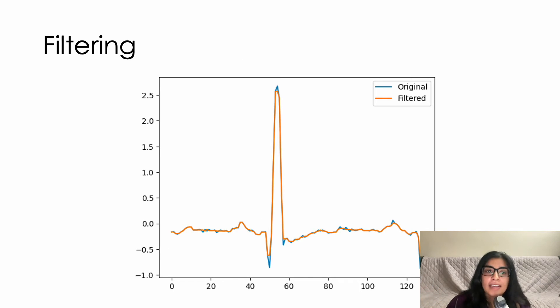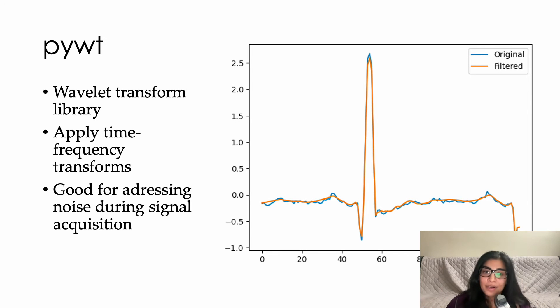We can also perform filtering. And here you can see the ECG waveform, originally the raw waveform is in blue, and then the filtered processed waveform is in orange. And we can remove and smooth out some of those noise sources and end up with a better signal that's easier to work with for any kind of downstream analysis we want to do. An example of a library that is very useful for this kind of work is PyWT. It's the wavelet transform library, which actually applies time frequency transforms. So it doesn't just look at the time domain or the frequency domain of the signal, but actually processes it in tandem. It's very good for addressing the kinds of noise we see in biosignals that happen during the acquisition process. And that's what we've done here. So I'm going to walk you through just one example of the kind of filtering that's available here in this open source library.